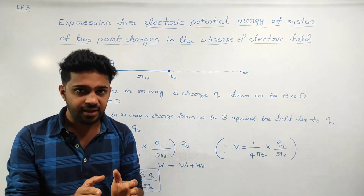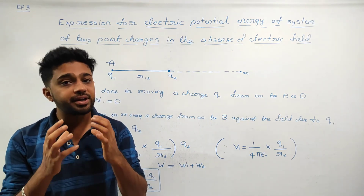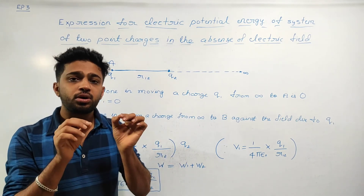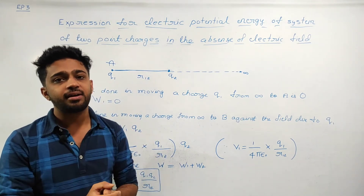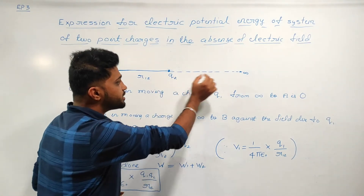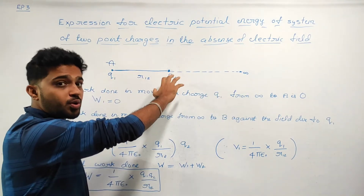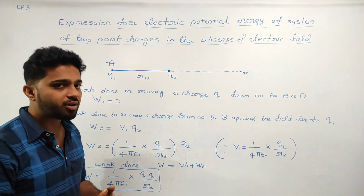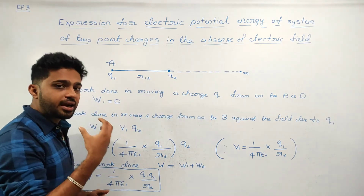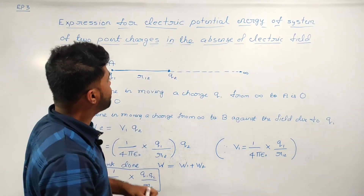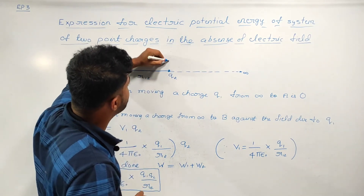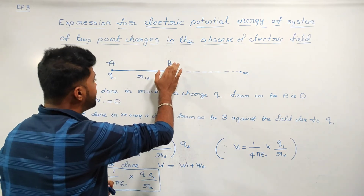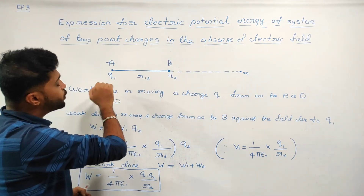What is the work done? V is the electrostatic potential. So W is equal to Q into V, where Q is the charge. V is the electrostatic potential at point B due to charge Q1.